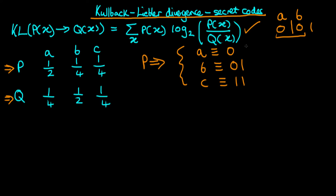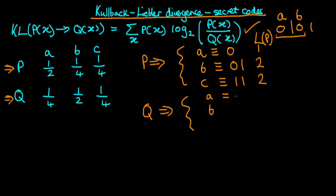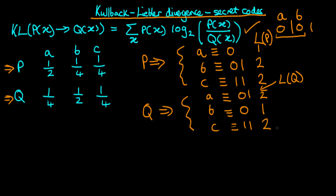Any message we encode using this crib sheet is uniquely decodable. We can say the length of each code word: for letter a it's length one, and for b and c it's length two. This is a function I'm going to call l of p — the length for the optimal code in language p. We can do the same thing for language q. For language q, a and b essentially swap position: a is now 01, b is just 0, and c is 11. Now our l of q distribution gives a length of two for letter a, one for b, and two for c.